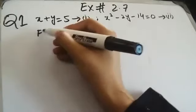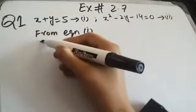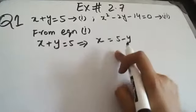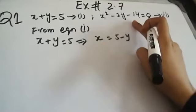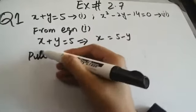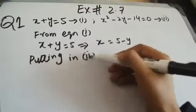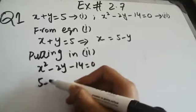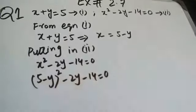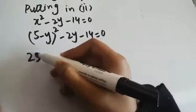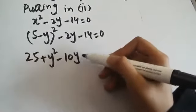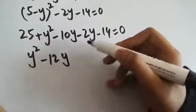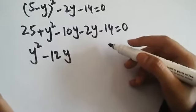Now from equation 1, x plus y equals 5. We find the value of x by taking y to the other side, giving x equals 5 minus y. We substitute this into equation 2: x squared minus 2y minus 14 equals 0. Substituting x gives (5 minus y) squared minus 2y minus 14 equals 0. Opening the square gives 25 plus y squared minus 10y minus 2y minus 14 equals 0.